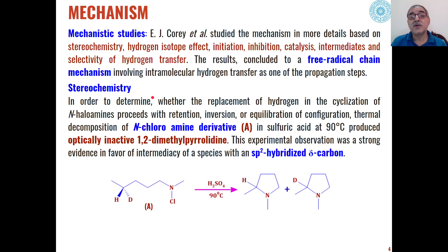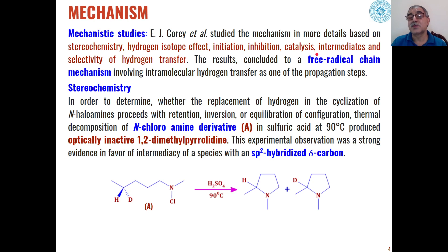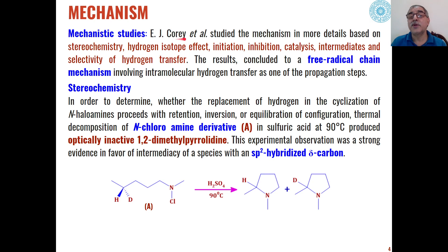Similarly, on different grounds, Khoury studied the mechanism based on stereochemistry, hydrogen isotopic effect, initiation of the reaction, inhibition of the reaction, the catalysts used, the types of intermediates formed, and the selectivity of the hydrogen transfer. All these aspects studied by Khoury concluded that a free radical chain mechanism is involved in this type of intramolecular hydrogen transfer in the reaction.